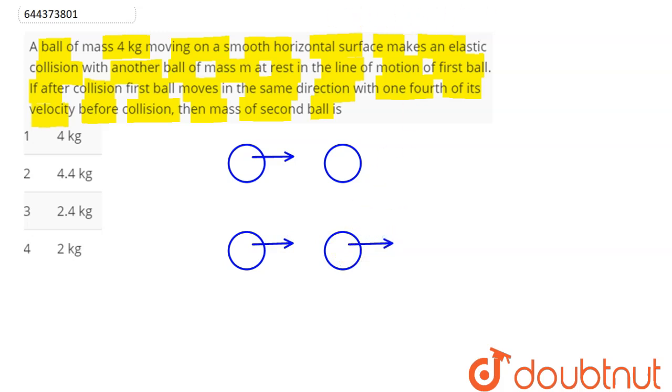the initial ball moves along the same direction with one-fourth the initial velocity before collision. We need to find the mass of the second ball. This mass is 4 kg, this mass is m which is to be found out. So this is 4, this is m. Initial velocity of this ball is u, final velocity here is u by 4.